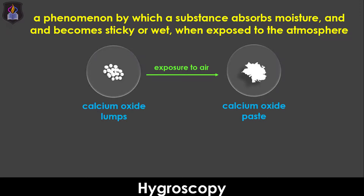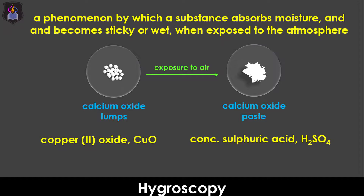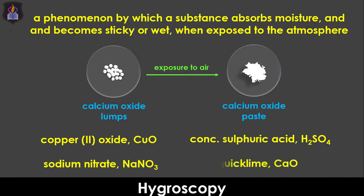Examples of hygroscopic substances are concentrated sulfuric acid, copper-2-oxide, sodium nitrate, calcium oxide (also known as quicklime), etc.